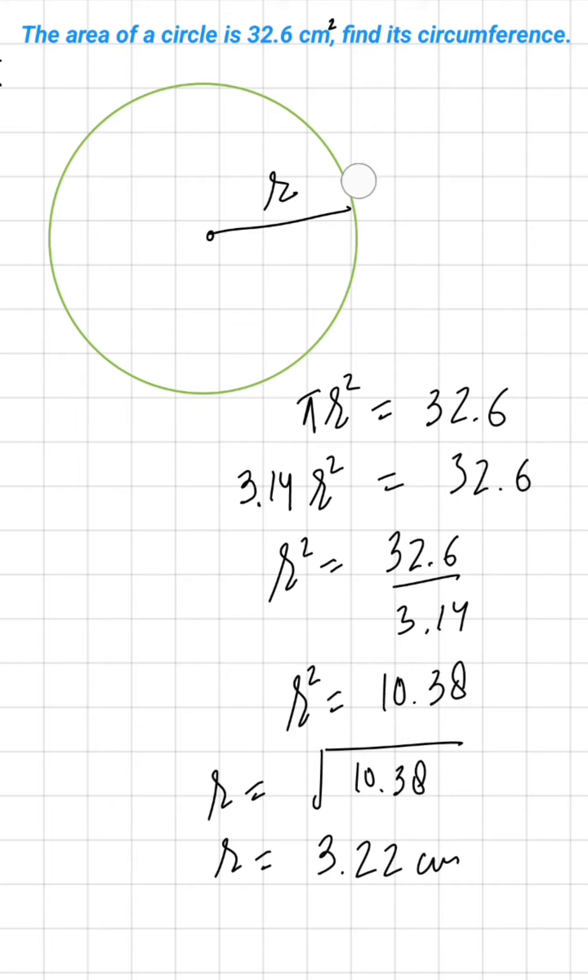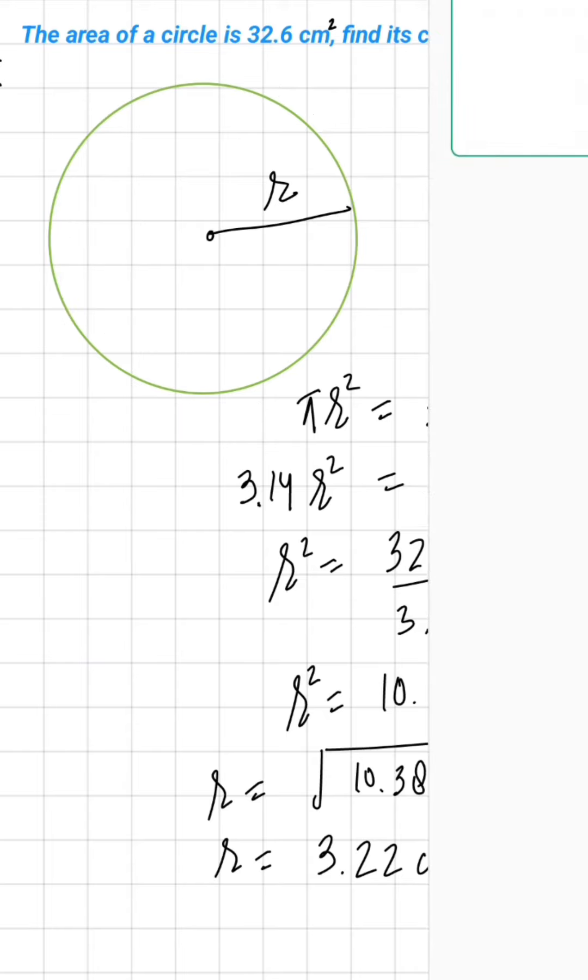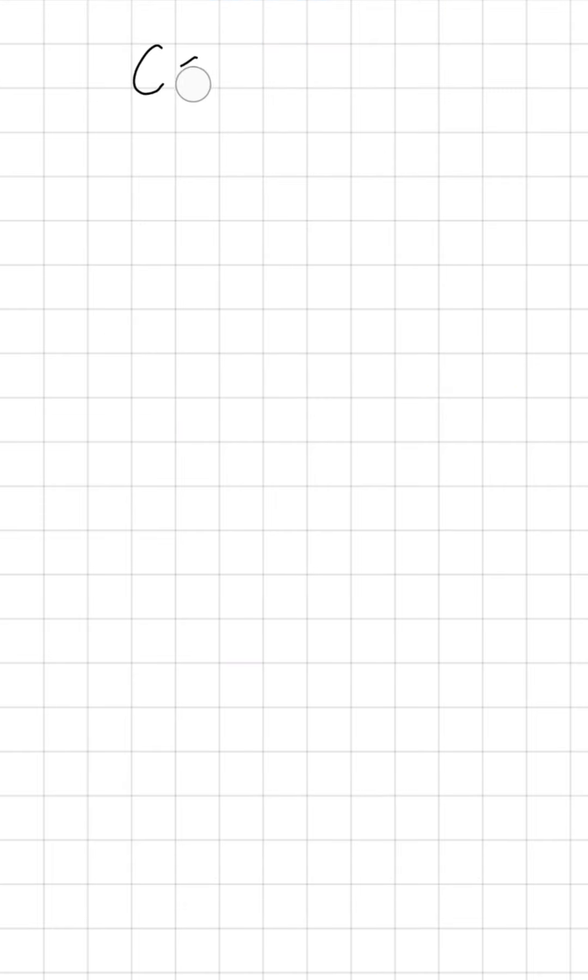Now we have the radius. If we have circumference to find, then the formula is 2πR. So let's find circumference, which is 2πR. We can write 2, π value 3.14, radius value 3.22.